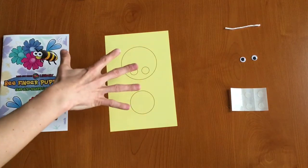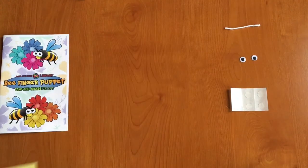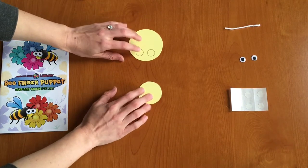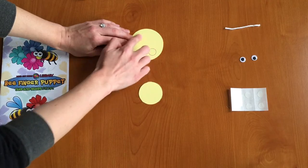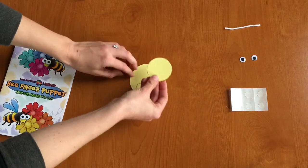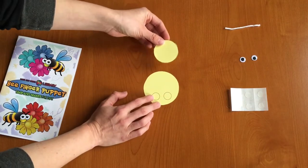So we'll cut those out and now I have them here. So this big circle with the two little circles in it is going to be your bee's body and the medium sized circle is going to be your bee's head.